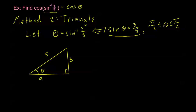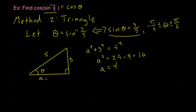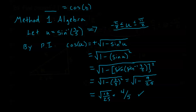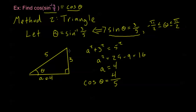Calling the adjacent side a, I use the Pythagorean theorem: a squared plus three squared equals five squared, so a squared is twenty-five minus nine, which is sixteen, giving a equals four. No plus-or-minus is needed since triangle sides are always positive. Therefore cosine of sine inverse of three-fifths — which is cosine of theta — equals adjacent over hypotenuse, or four-fifths. Exactly the same answer as the algebraic method. I prefer the triangle method, but use whichever you're more comfortable with.